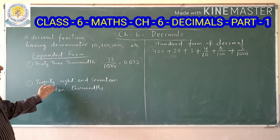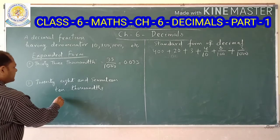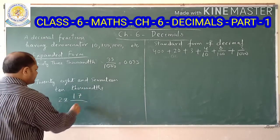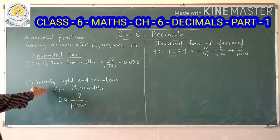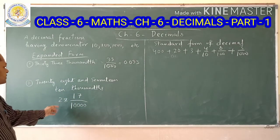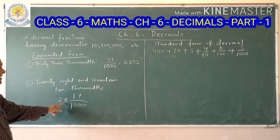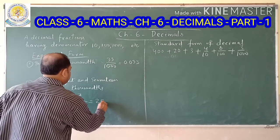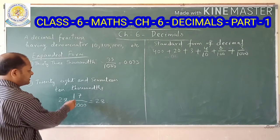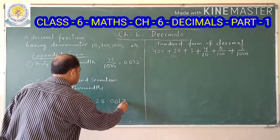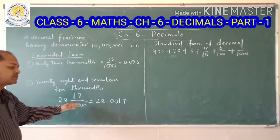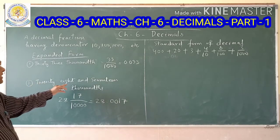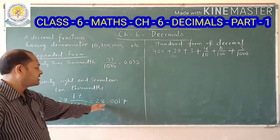The next example: 28 and 17 by 10,000. Here 28 is the whole part and 17 is the numerator with 10,000 as the denominator. Since 10,000 has four zeros, the decimal part needs 4 places. 17 has only 2 digits, so we add two zeros: 0.0017. So the decimal form is 28.0017. In words: twenty-eight and seventeen ten-thousandths.